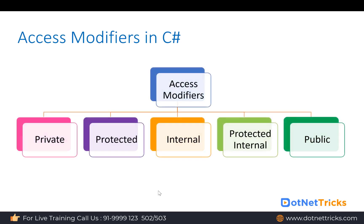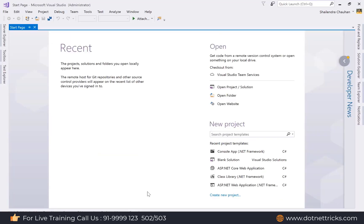In C#, we have five access modifiers: private, protected, internal, protected internal, and public.